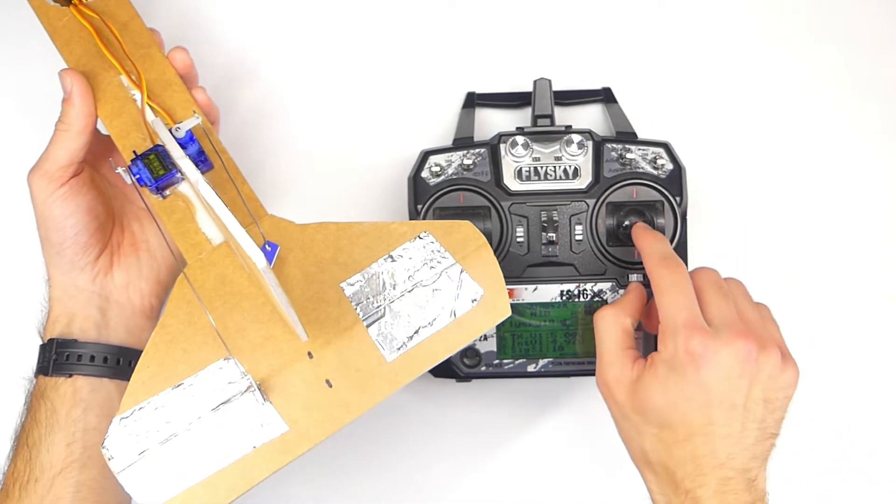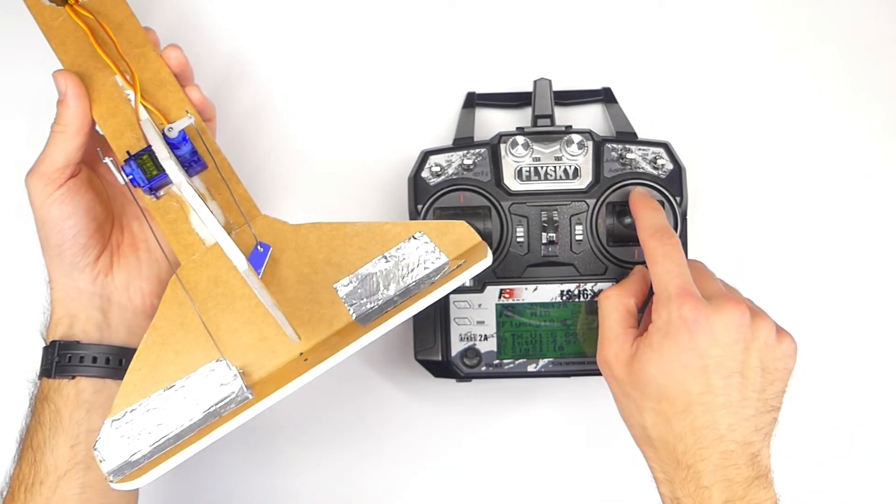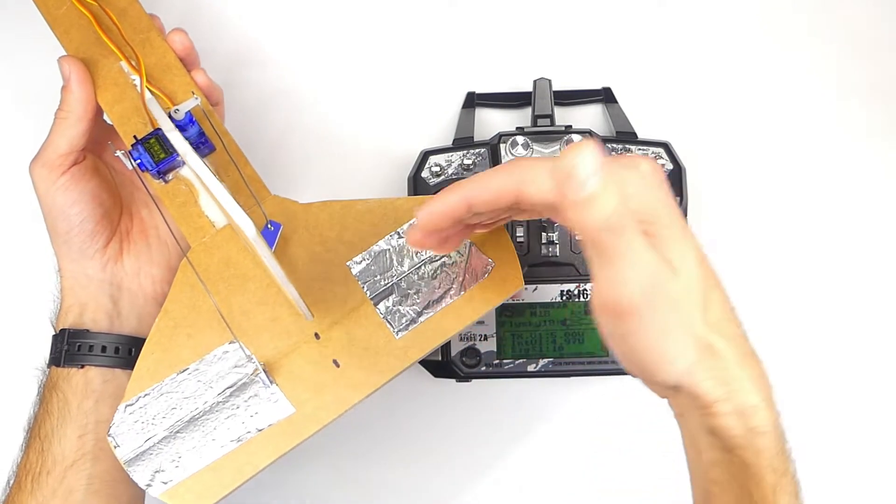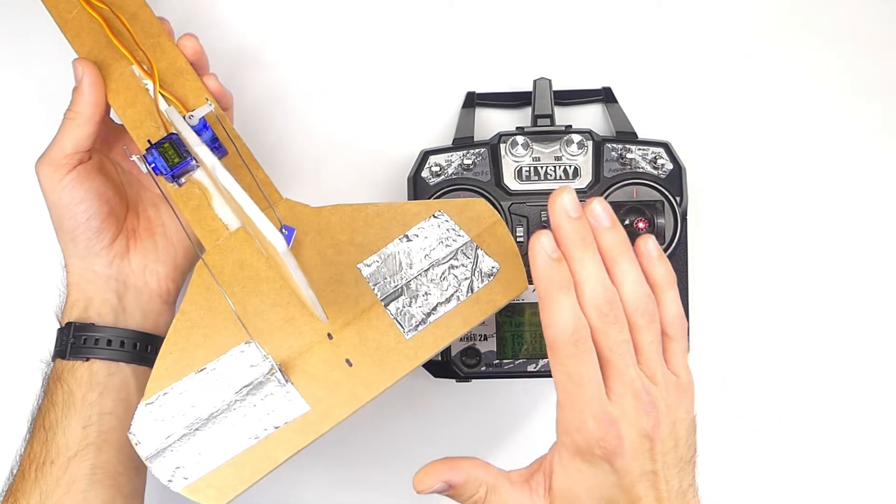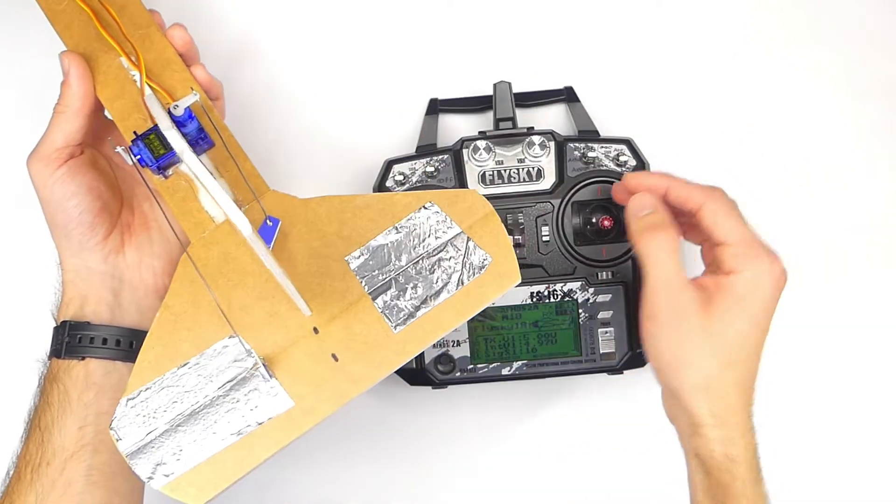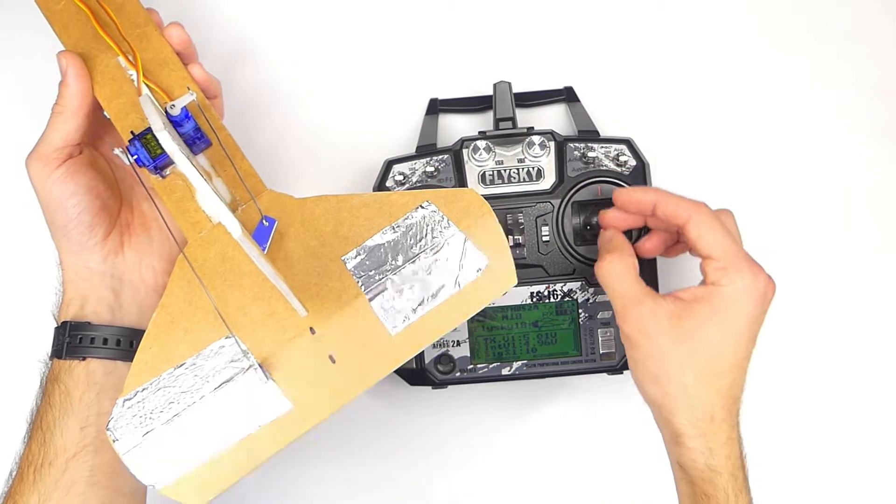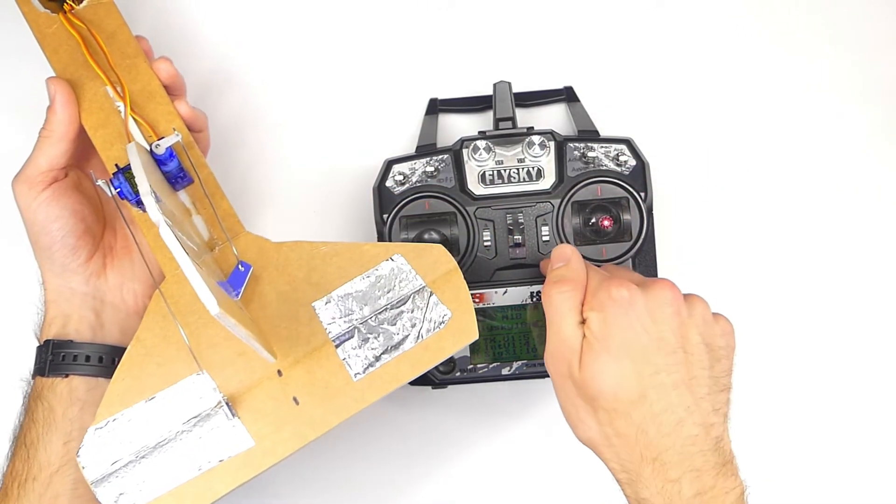And so in this case, when I push up on the elevator stick, the actual elevator should go down, which is going to cause the plane to point the nose down. So right now it's actually backwards, so what I need to do is go into my transmitter and reverse it.